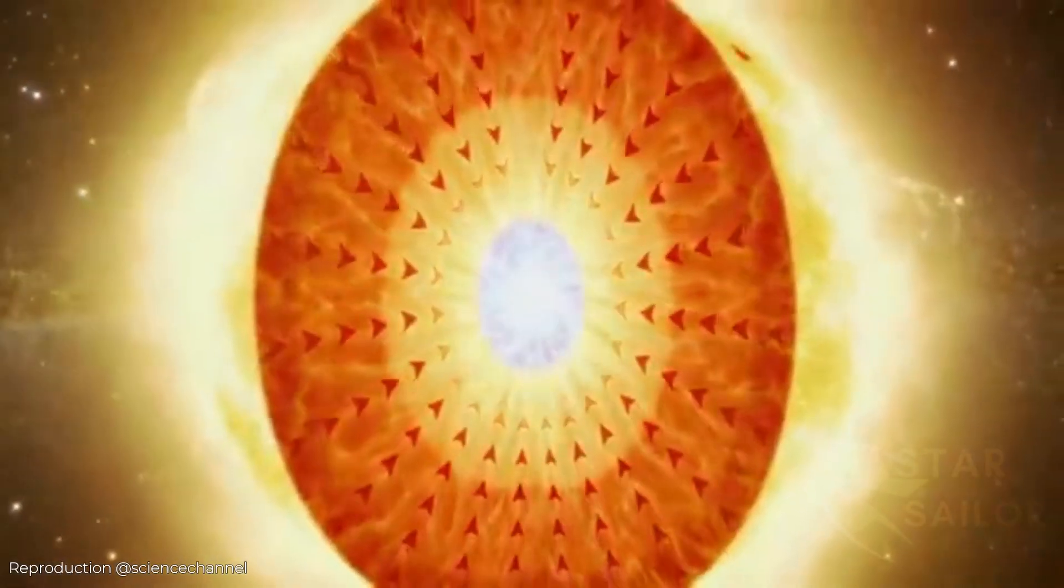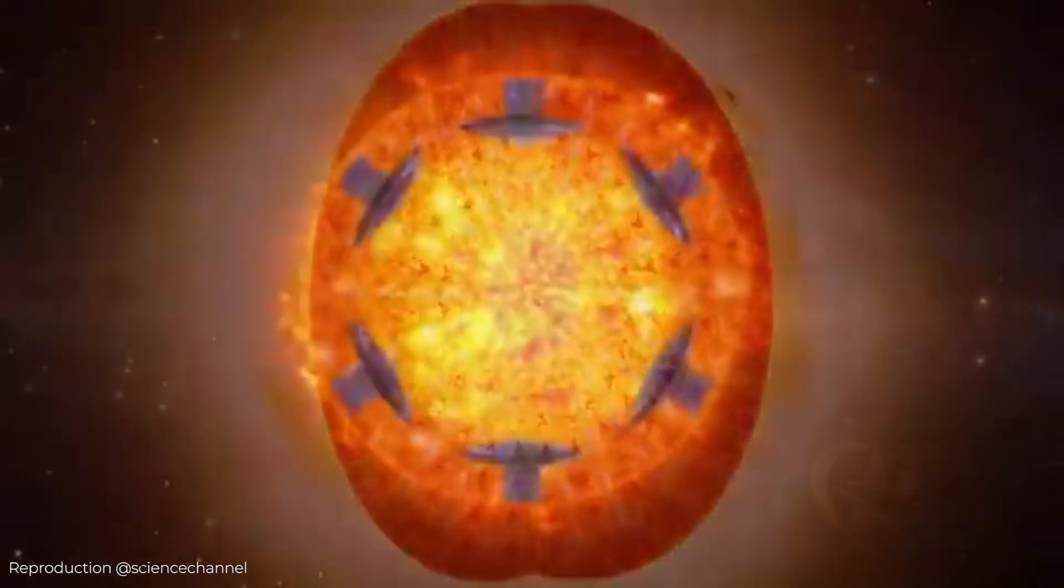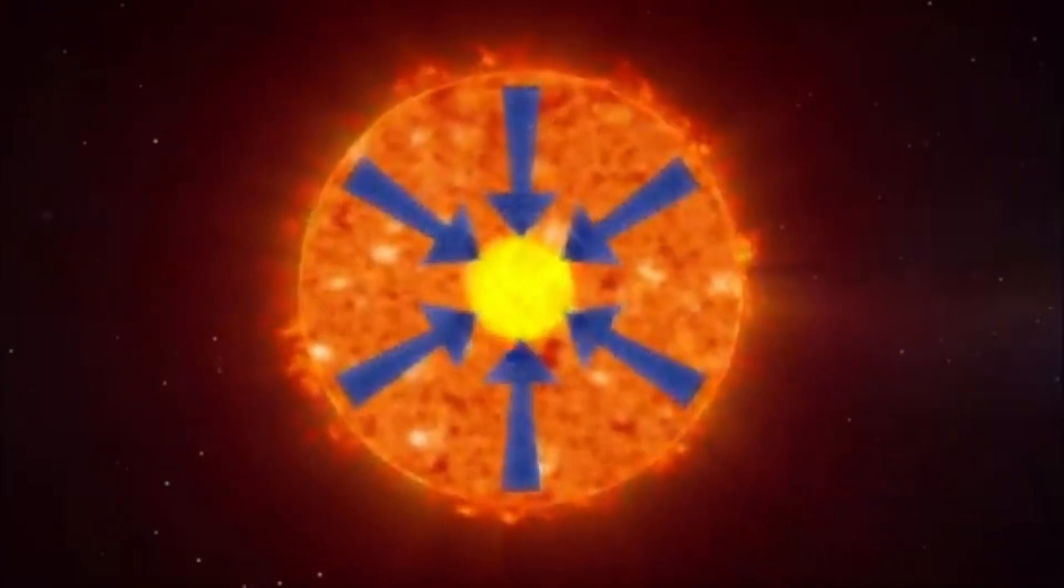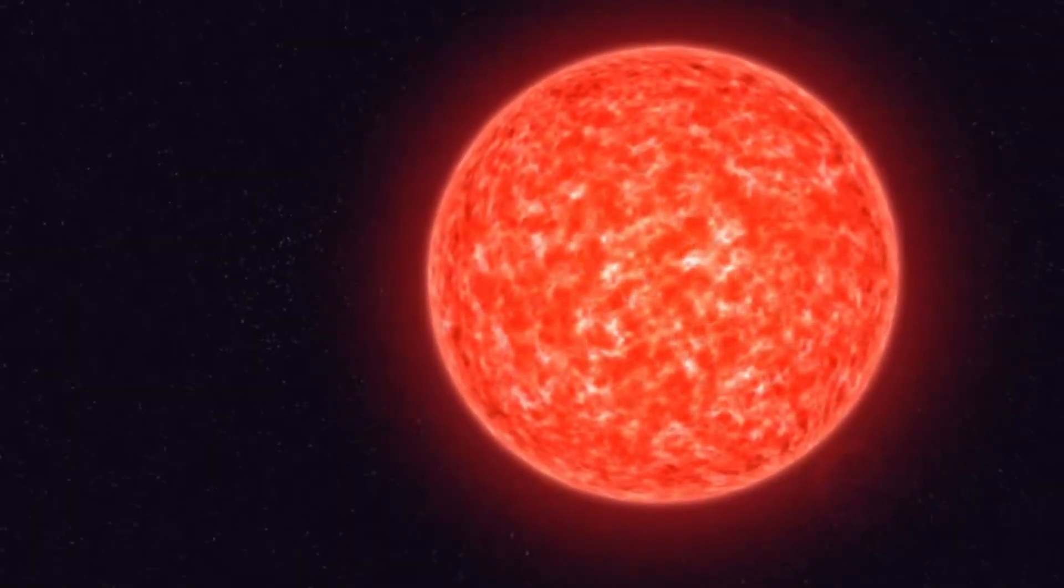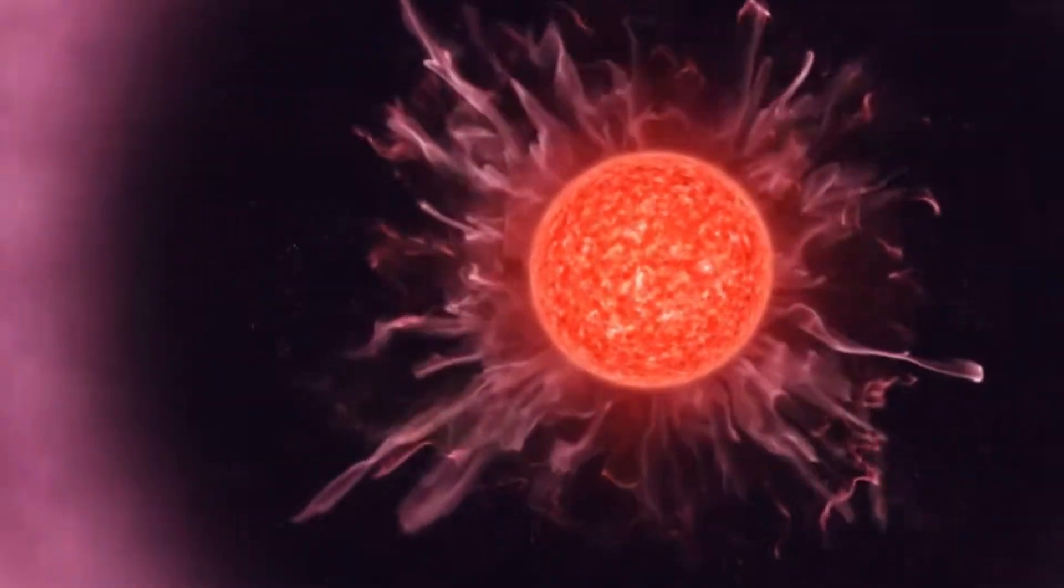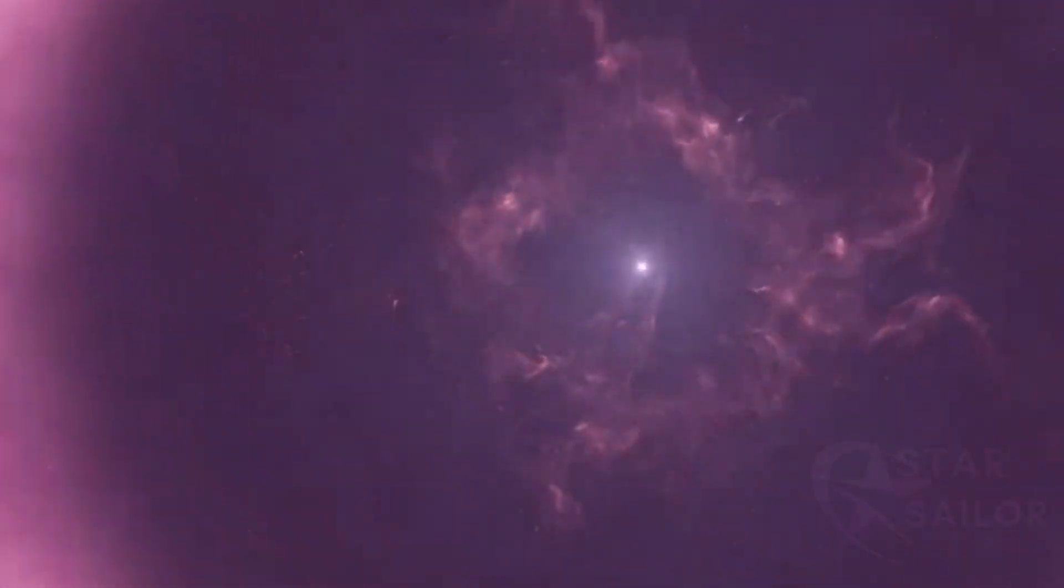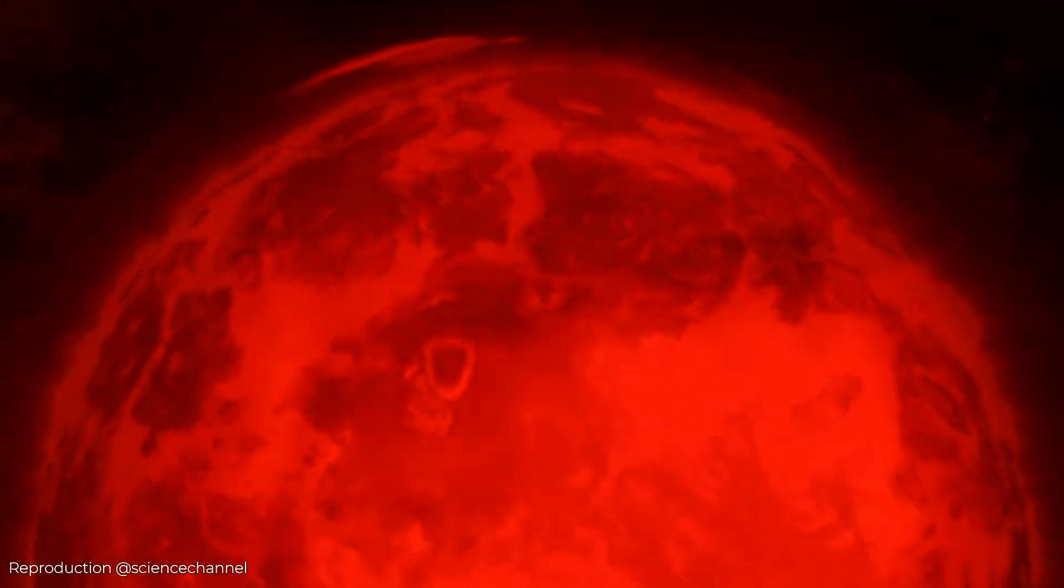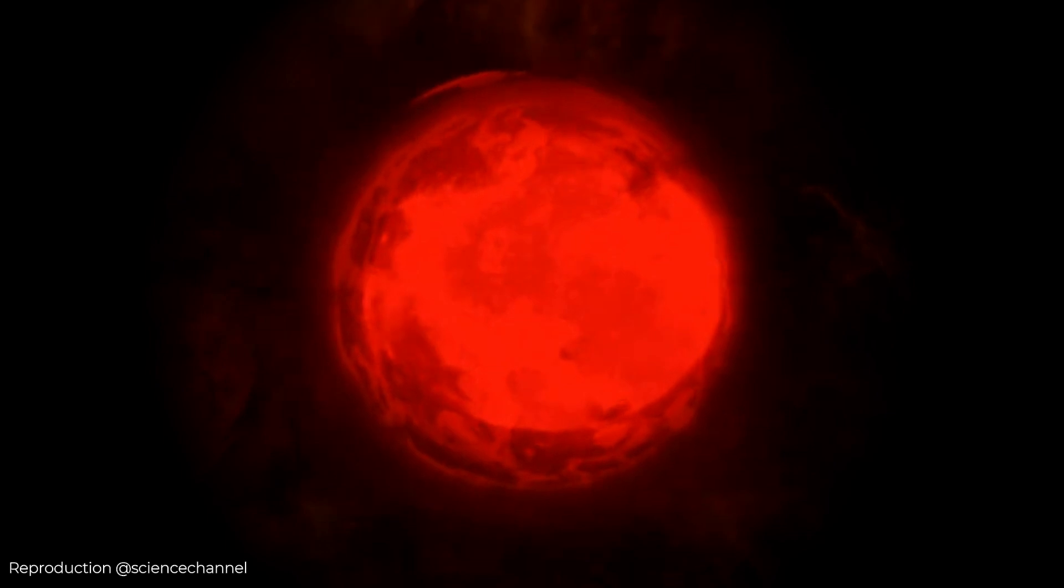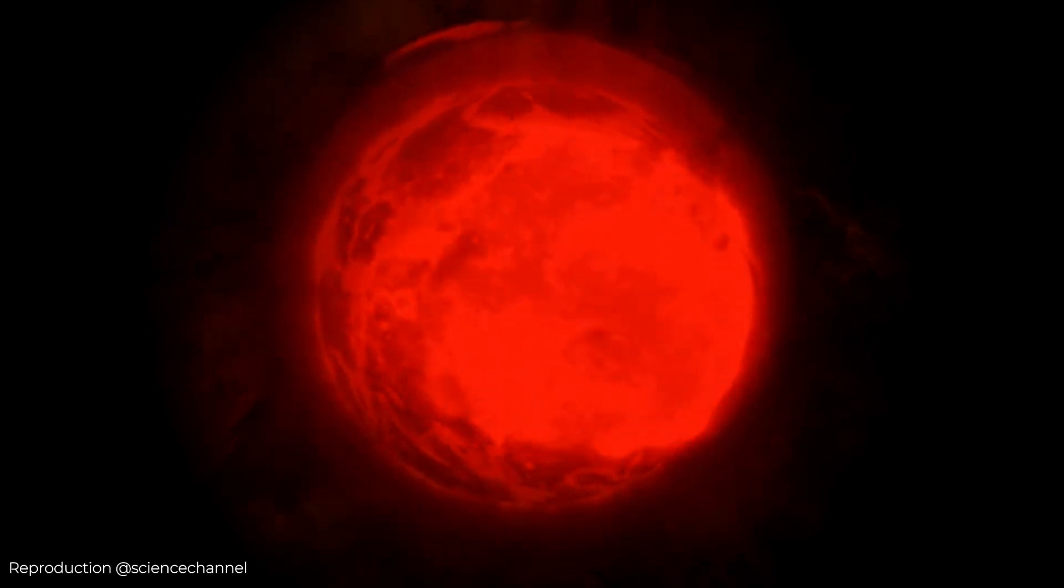As their nuclear fuel runs out, they can no longer sustain fusion reactions, and gravity begins to compress the remaining matter toward the star's core. This gravitational compression generates intense heat, sparking a final burst of nuclear fusion in the outer layers of the star. The star then releases powerful pulses of energy, expelling its outer layers into space and exposing the hotter, denser core beneath. First, the outer layers expand dramatically during the red giant phase, fueled by the intense heat. Then, the core collapses into a dense white dwarf while the outer material is ejected into space, forming the stunning nebula we see today.